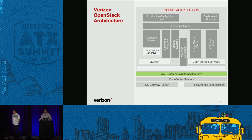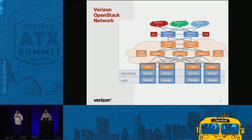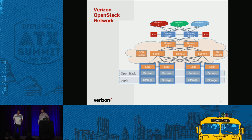We have a relatively simple spine and leaf architecture. Part of our goal is to deploy SDN controllers to manage our data center fabrics. The SDN controller part is to extend from just managing the internal data center fabric and gradually move out farther into the network so that we can control the whole network.